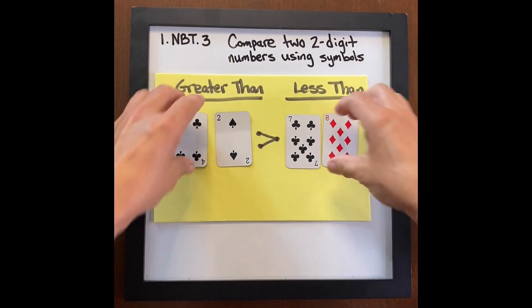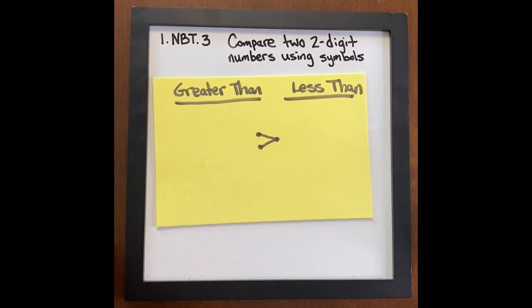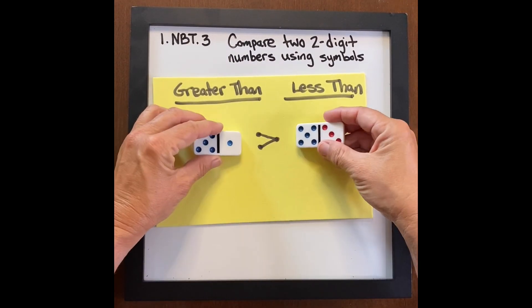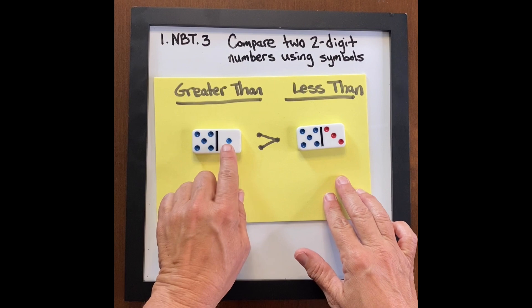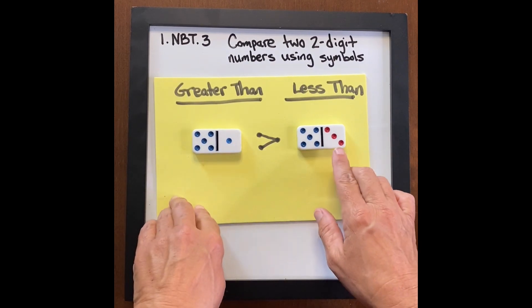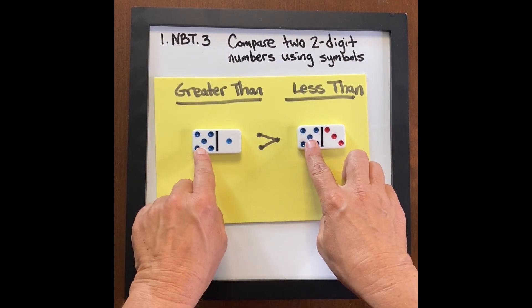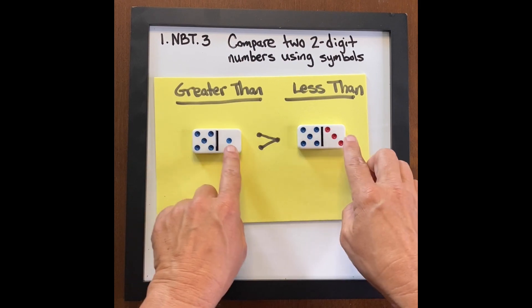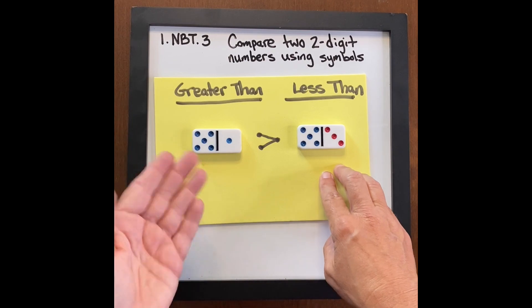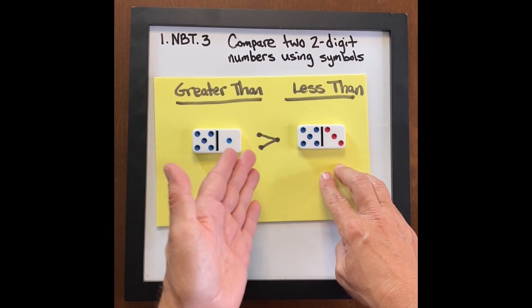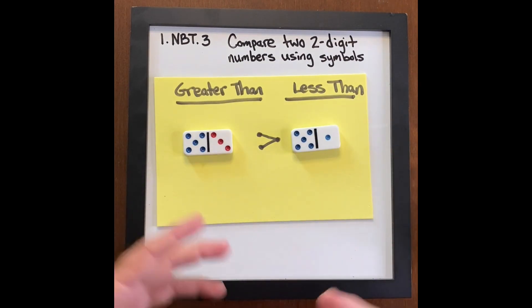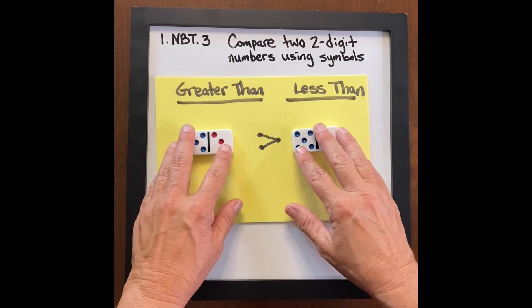Use this as a fun warm-up activity. You can ask students: here we have 51 and 53 — they both have 50, so what do we do next? This helps us go into place value. Is 51 less than 53? How many less? You can get questions like that and so forth.